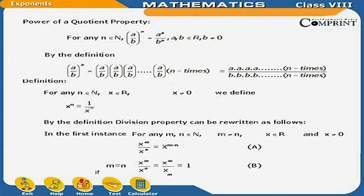Power of equation property: For any small n belonging to capital N, A upon B whole raised to the power n is equal to A raised to the power n upon B raised to the power n, where A and B belong to real numbers R and B is not equal to 0. By definition, A upon B whole raised to the power n equals A upon B multiplied n times, which equals A multiplied n times upon B multiplied n times.